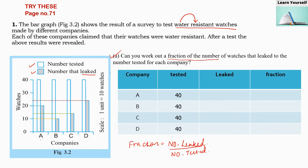Now let us find out how many watches are leaked per company. You can put a ruler or scale and check the number. For company A, the bar graph shows 20 watches leaked. For company B it is 10. Company C is between 20 and 10, so I am taking 15. For company D it is between 30 and 20, so it is 25.